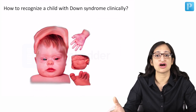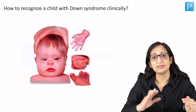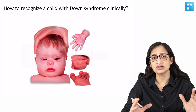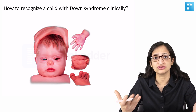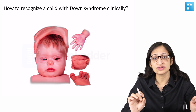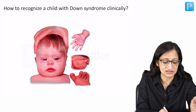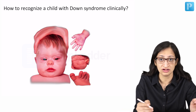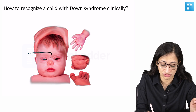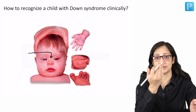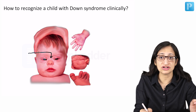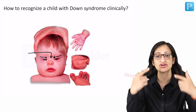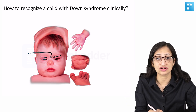Now, how to recognize a child with Down syndrome clinically? You can make out that there is some abnormality in the face of this child. The salient features which will help you diagnose this condition include a depressed nasal bridge, and if you appreciate closely, you can notice there is a slant in the eyes — instead of being horizontal, the eyes are slanting.